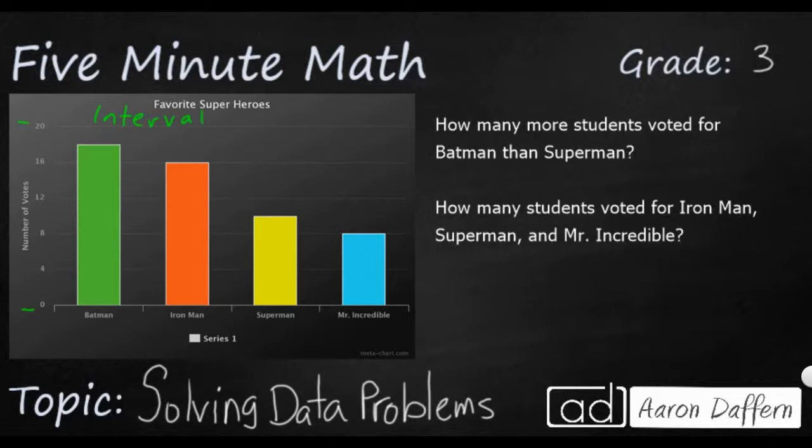And we don't count by ones, zero, one, two, three, four. We're going to count by fours: four, eight, 12, 16. So our interval is four. And that's going to be important when we try to put numbers on each of these bars.